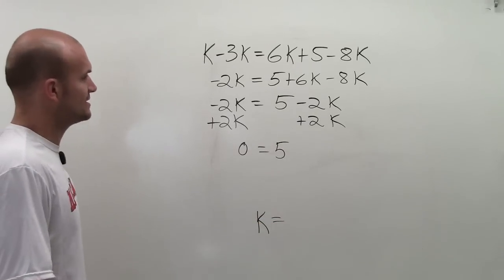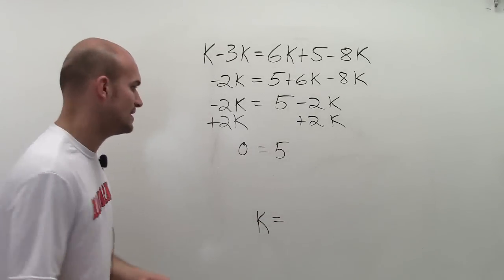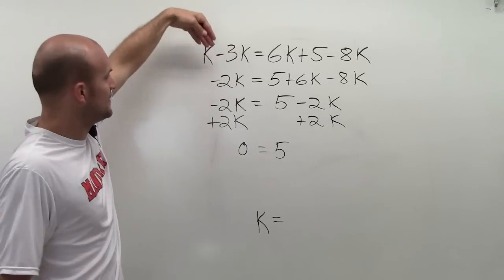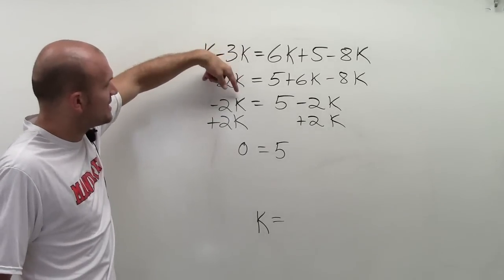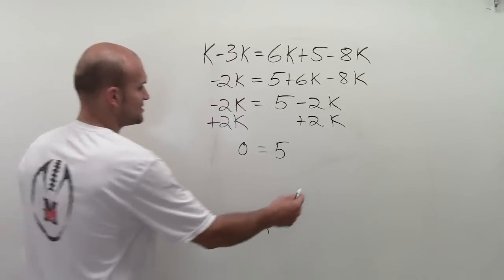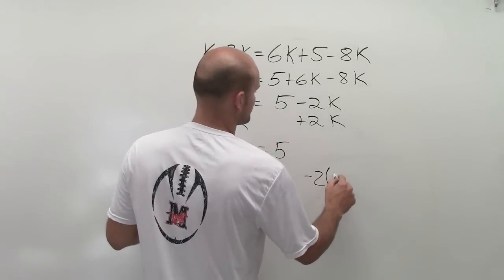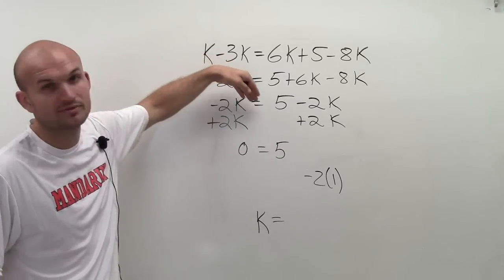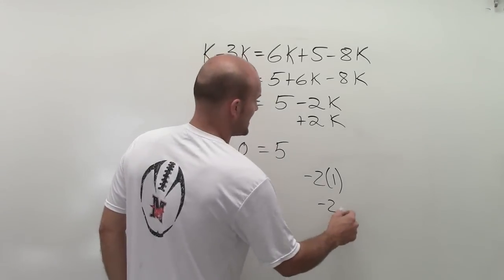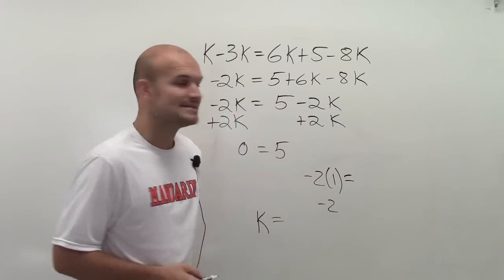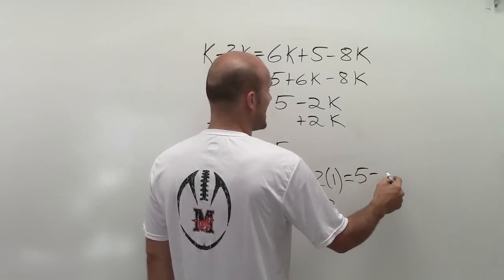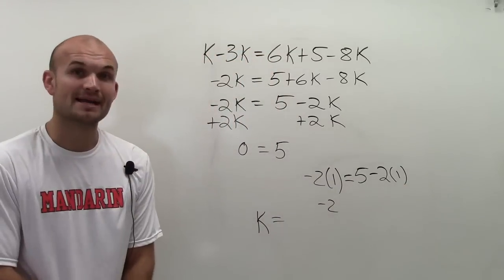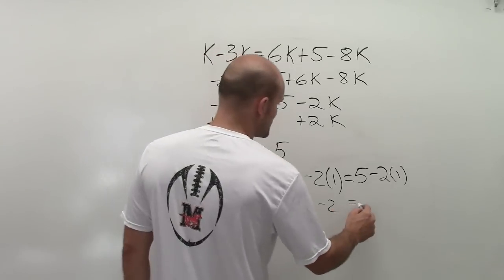The other way you can look at this is let's plug in a value of k. Let's try k equals 1. If I plug in k as 1, on the left side I have negative 2 times 1, which is negative 2. On the right side, I'm taking 5 minus 2 times 1. Well, 5 minus 2 times 1 equals 3.